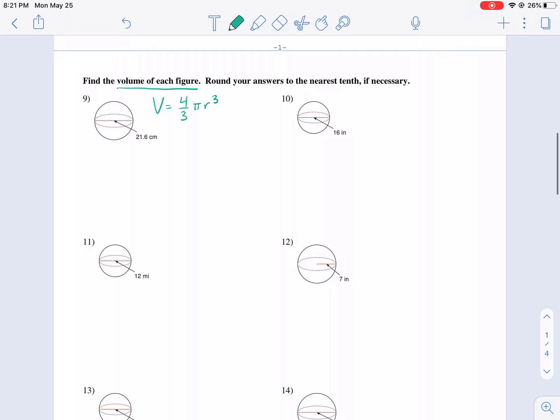Another way to think of this is volume equals 4πr³ divided by 3. Whichever way you like better, that's the one you can use. Again, it relies on the radius. So we're going to take this problem for number nine and we're going to divide the diameter by two to get our radius, 21.6 divided by two, and we get 10.8.